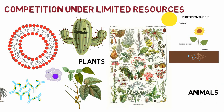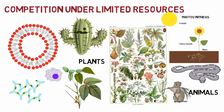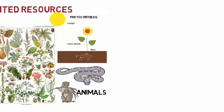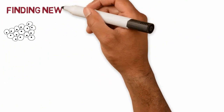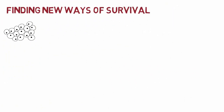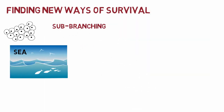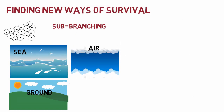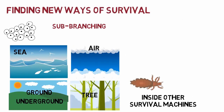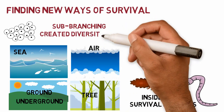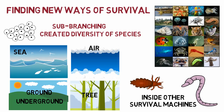Animals, another branch of survival machines, exploited the labors of the plants by eating them or eating other animals. Both plants and animals evolved to become multicellular, finding new ways of survival and creating new sub-branches specializing in different conditions: the sea, on the ground, in the air, underground, up trees, or inside the bodies of other survival machines. This sub-branching facilitated the creation of the diversity of species we see today.